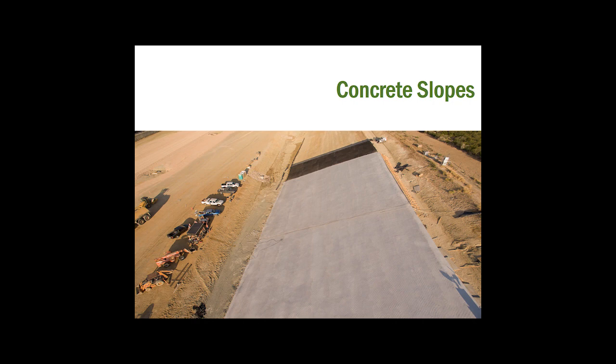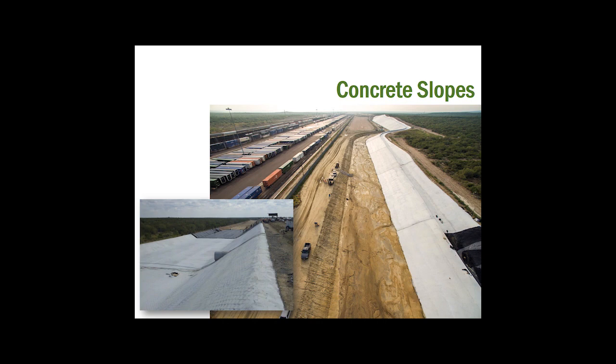An advantage of the GeoWeb system is that it assures constant concrete thickness with no voids or overfills. Pore pressure buildup is always a concern underneath concrete structures, so this project included drilling weep holes through the set concrete to help relieve that pressure — always something to consider with a concrete structure. The full extent of this project was more than a million square feet of GeoWeb panels and it saved the railroad a significant amount of money and installation time.